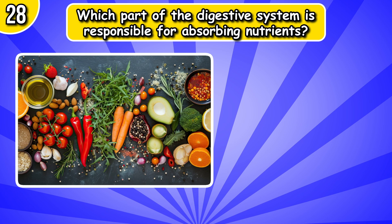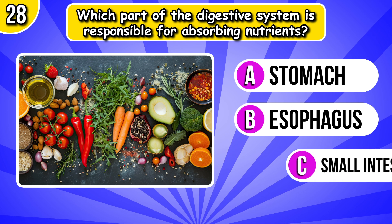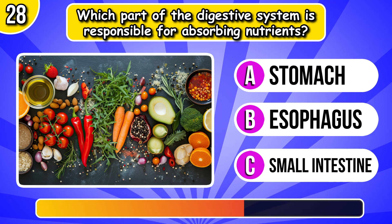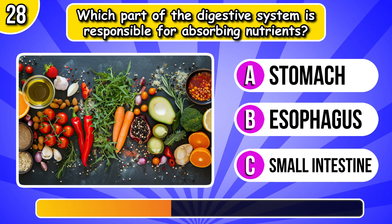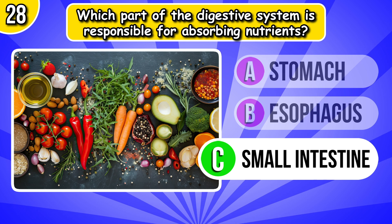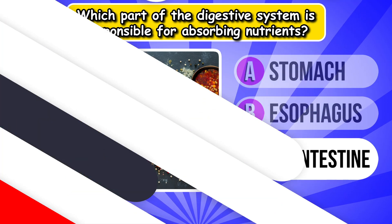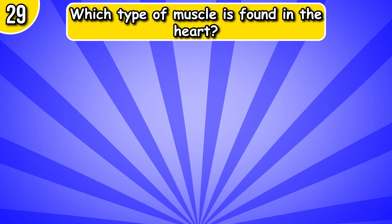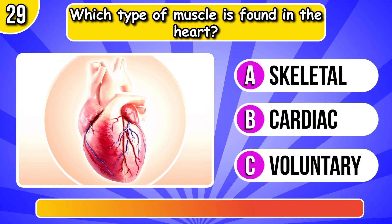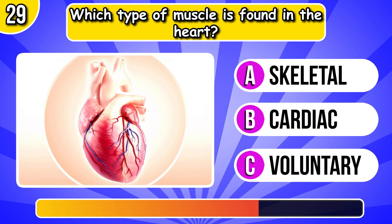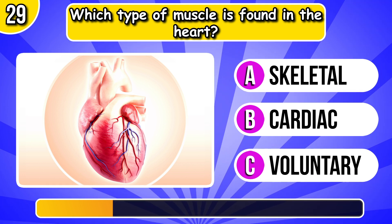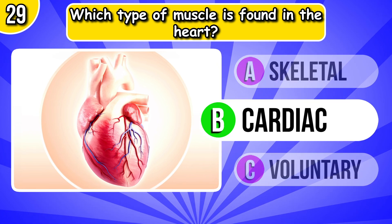Which part of the digestive system is responsible for absorbing nutrients? It's small intestine. Which type of muscle is found in the heart? Cardiac.